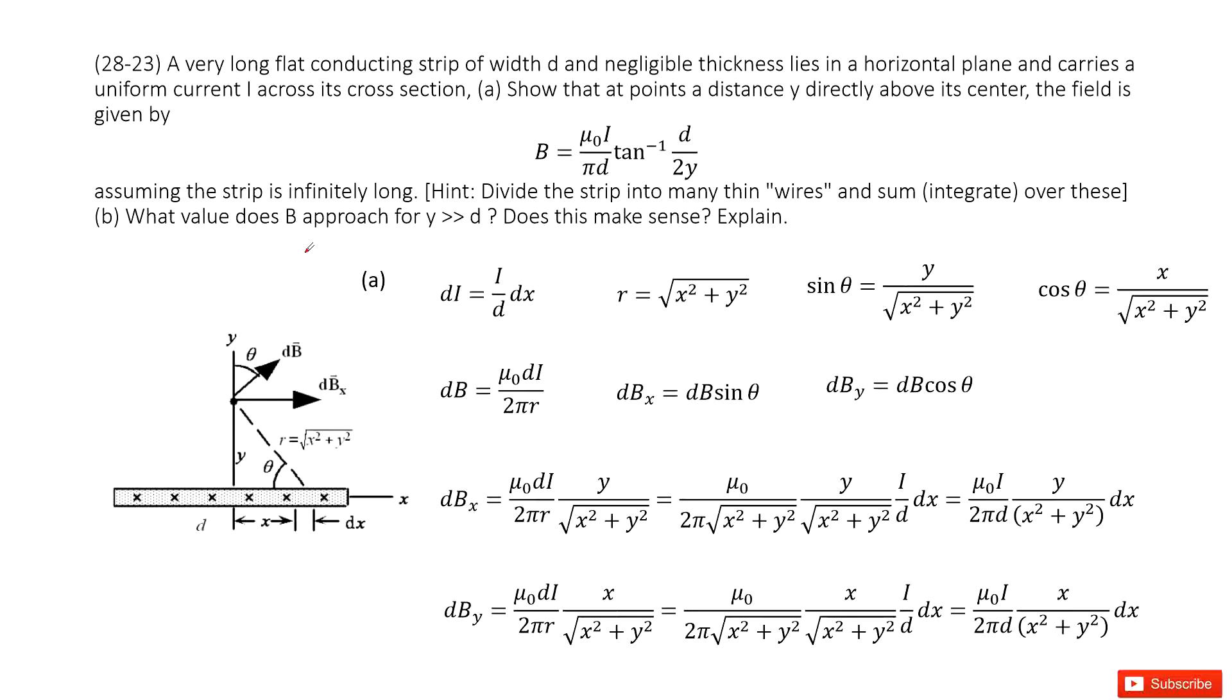Chapter 28 is sources of magnetic fields. There we have a very long flat conducting strip with width d, and we can ignore the thickness. It's placed horizontally.